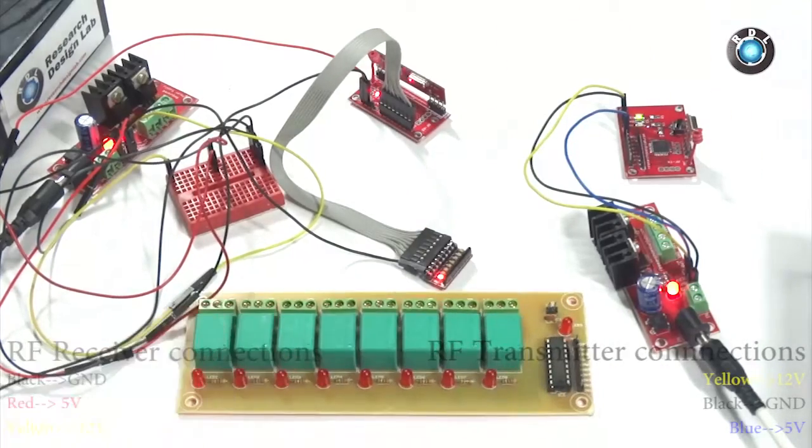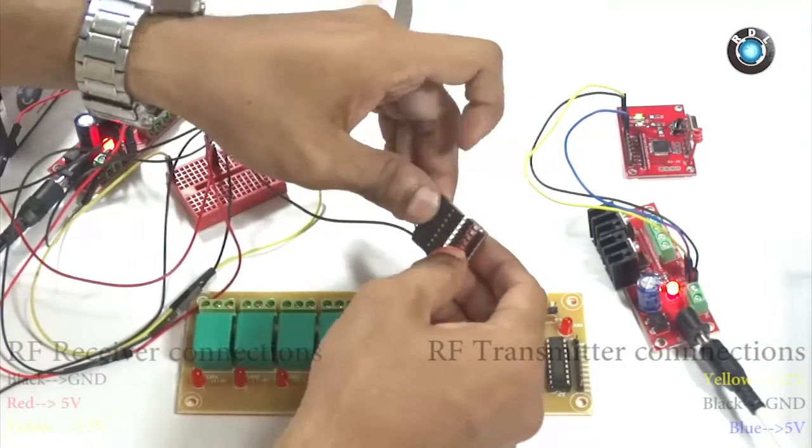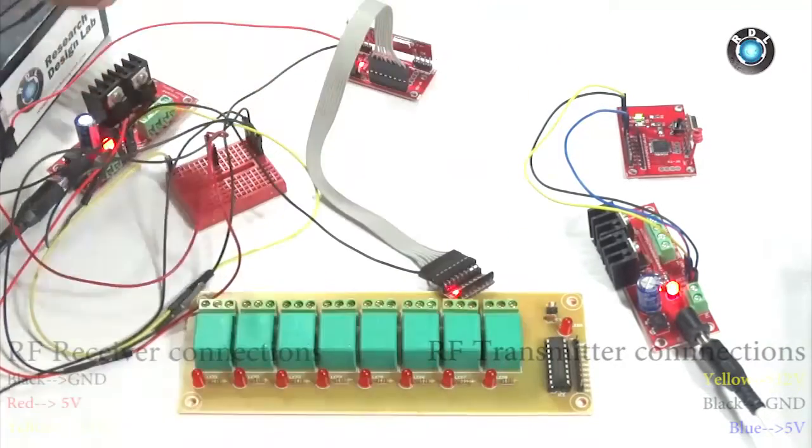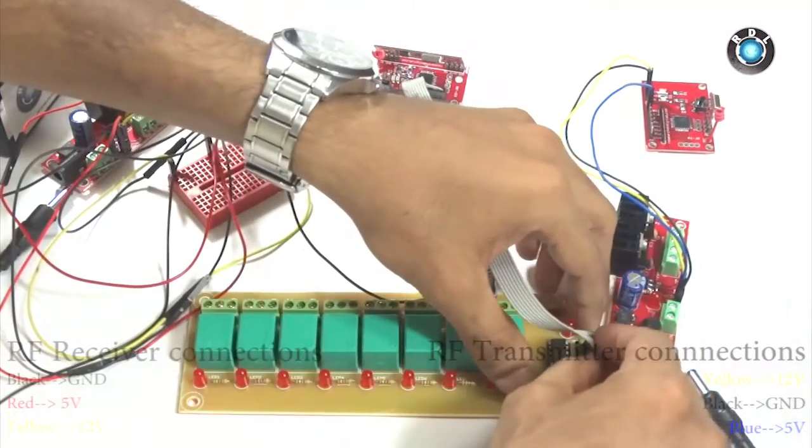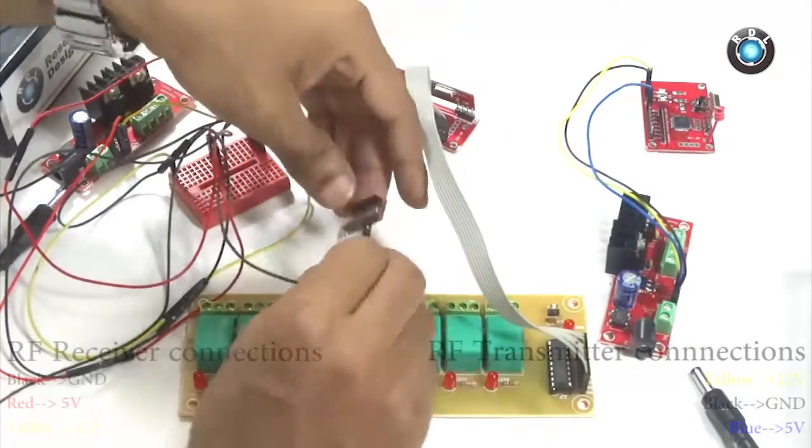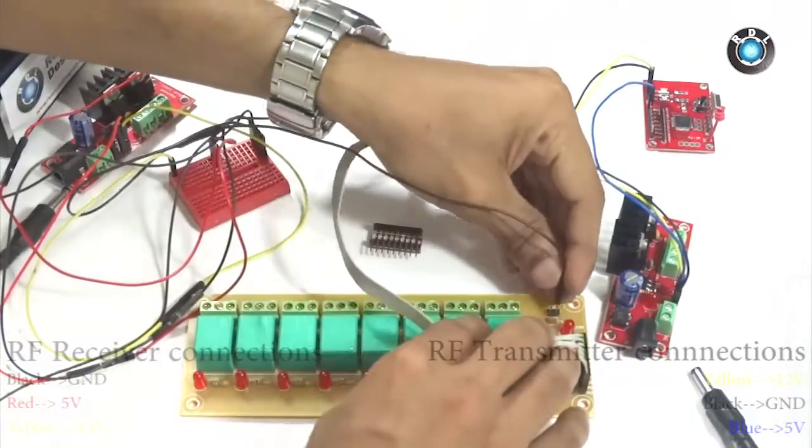Now I shall demonstrate how to use relays along with this board instead of these LED indicators. Remove the 8-bit jumper cables from these LEDs and connect it to the input of this relay board. Then, connect the black wire to the ground of the relay board.